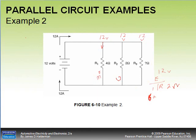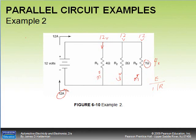All branch amperages must add up to total amperage of 12 amps. We have 3 and 6, which is 9, so the third branch must carry 3 amps. If the amperage is the same as the first branch, so must be the resistance — 4 ohms. Verified: 12 divided by 3 equals 4 ohms.